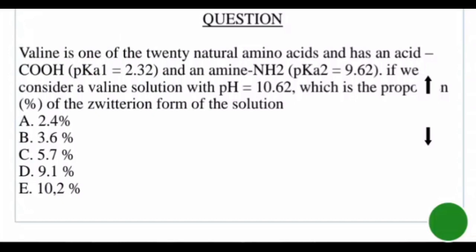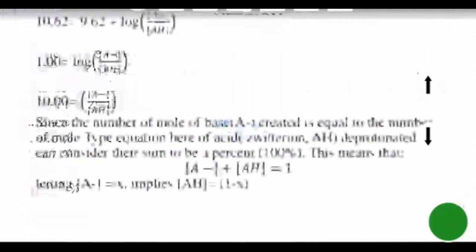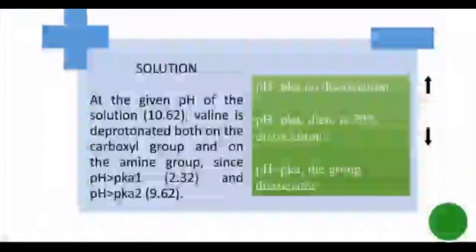The amine group has pKa2 of 9.62. If we consider a valine solution with a pH of 10.62, what is the proportion — in percent — of the zwitterion form of the solution? The zwitterion is a molecule whose net charge is zero, meaning it contains equal numbers of positive and negative charges. That is what we are to calculate.